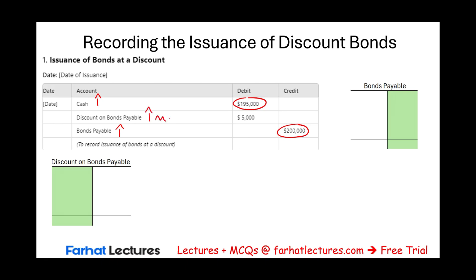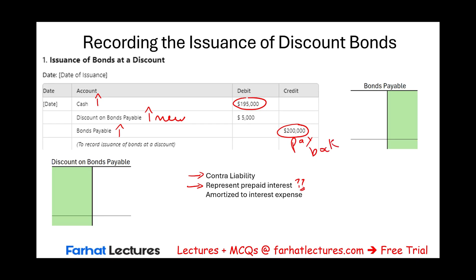Discount on bonds payable is a new account. What type of account is it? It's a contra liability. What does it represent? It represents prepaid interest. The company is promising to pay back $200,000, but they received $195,000. It means the $5,000 is the cost of borrowing — the cost of money — which we call interest. This is interest that we got charged upfront, $5,000. We are going to take this discount and amortize it to interest expense.